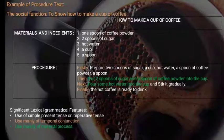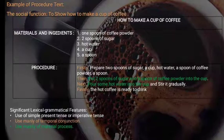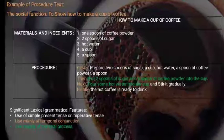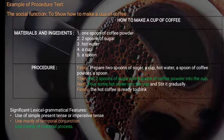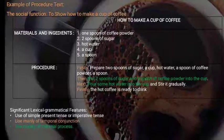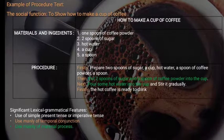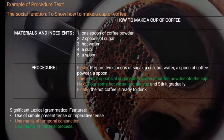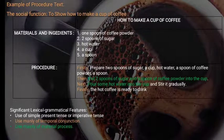The generic structure of procedure text is as follows. First is goal: it contains the purpose of the text, for example, 'How to make a cup of coffee.' Second is materials or ingredients: it contains the materials used in the process, for example, materials to make a cup of coffee. Third is steps: it contains the steps to accomplish the goal stated in the text.